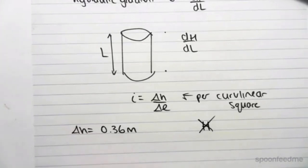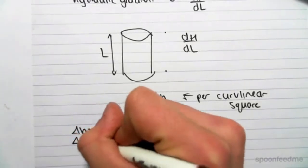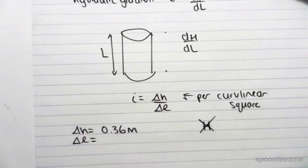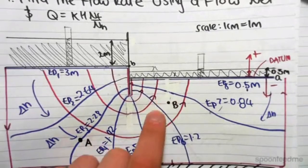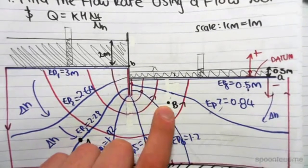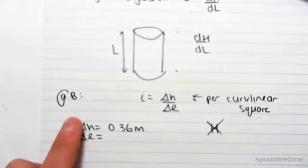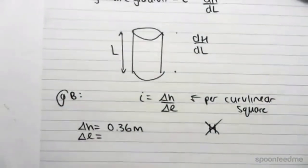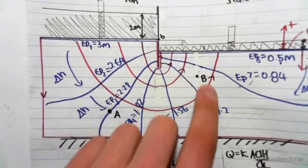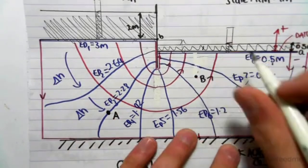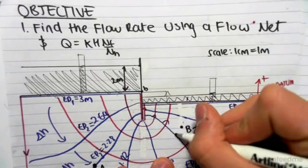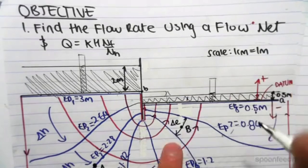Now the change in length, this is going to change for every single case. We're looking at point B. So we're going to find at B, the hydraulic gradient at B. This is going to change depending on where we are. For B, the change in length will be this length here, so change in L.